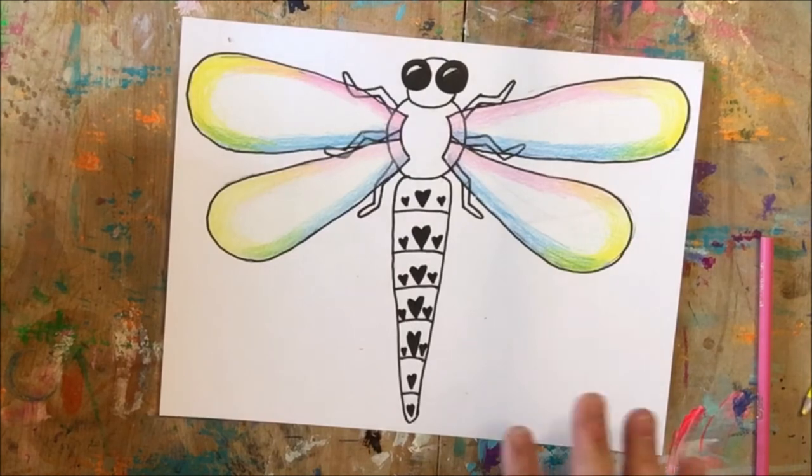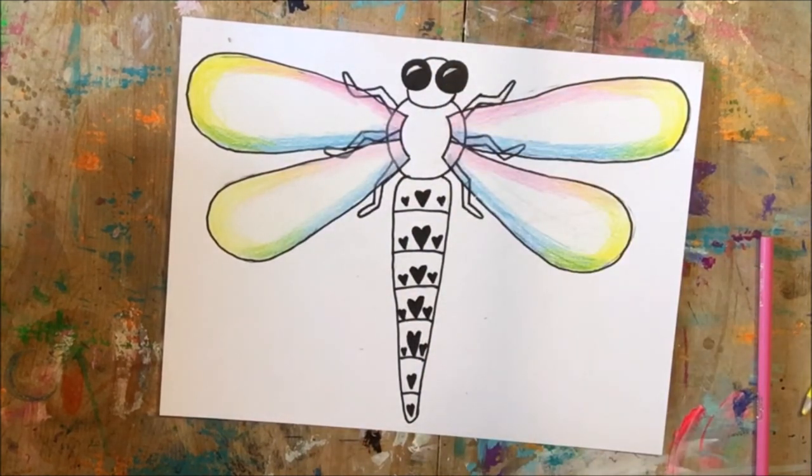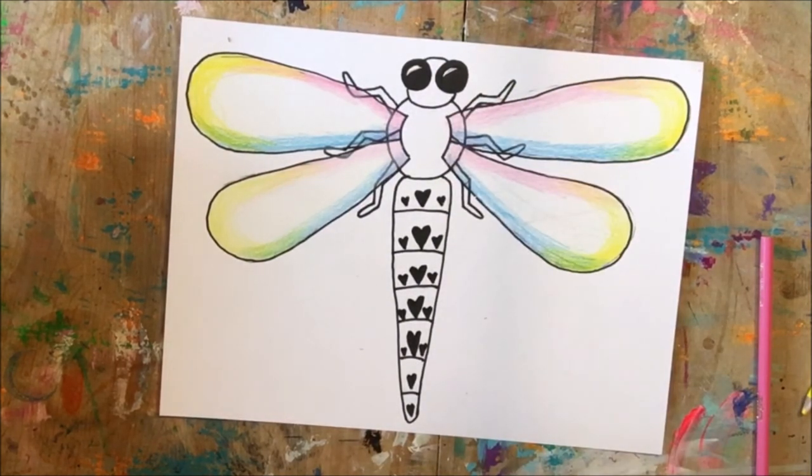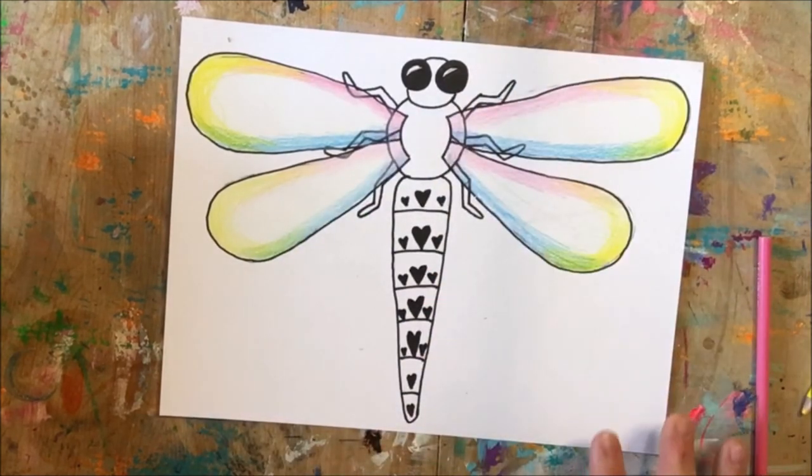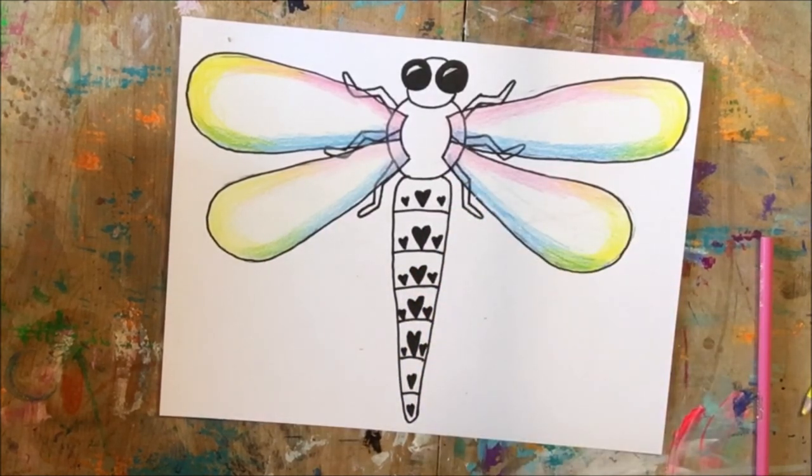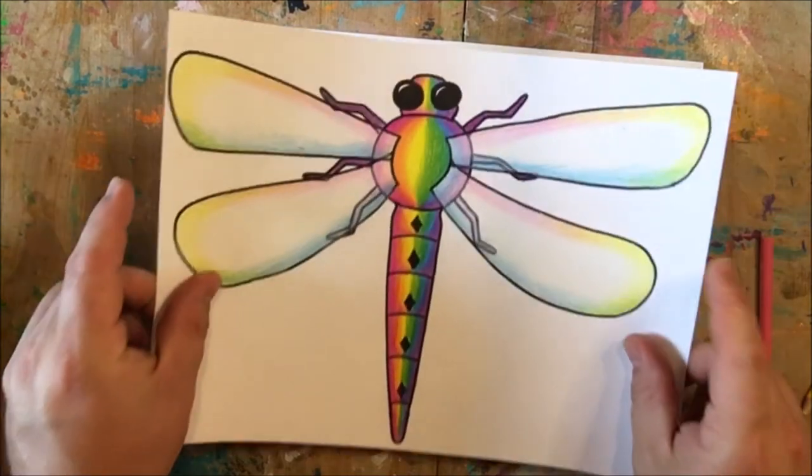So once your wings are done, like I said, you could come back and color your body however you'd like. It'd be fun if you had glitter. You could use glitter for the eyeballs. You can decorate the background. You could add some patterns in the background. You could Zentangle your background, just kind of like I talked about here on the abdomen. So there's a lot of really great opportunities for creativity in this project.